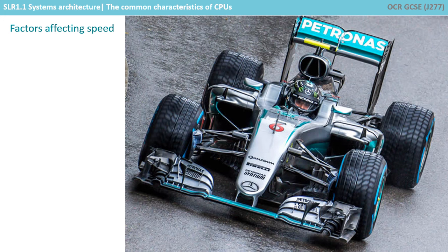Let's think about a typical racing car as an analogy before we look at the central processing unit itself. What are all the factors affecting the speed of this car? Well, obviously we have the horsepower of the engine itself, but that's not the only factor. In the same way with a CPU, you've got how fast the clock can tick, measured in Hertz, but there are many other factors which affect how fast it can perform.